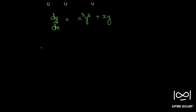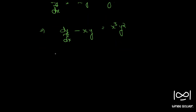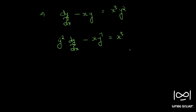This can also be written as dy by dx minus xy is equal to x cube y square. Now if we divide throughout by y square, we have y raised to minus 2 dy by dx minus xy raised to minus 1 is equal to x cube.